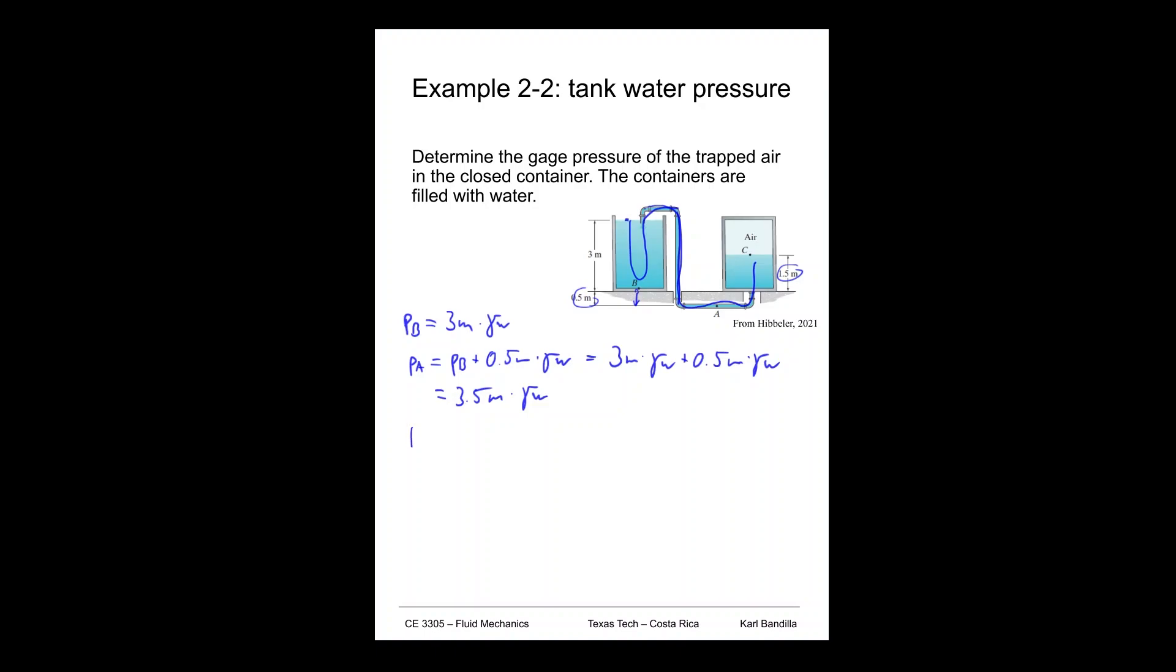So I can say PC is then going to be PA minus 2 meters times gamma water. I know that PA was 3.5 meters times gamma water minus 2 meters times gamma water. So of course 1.5 meters times gamma water. So that is the pressure that I'm going to have there.